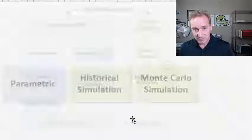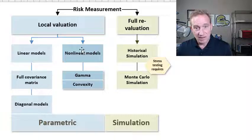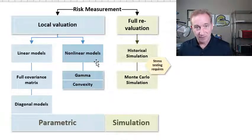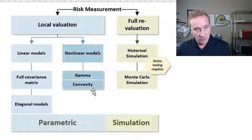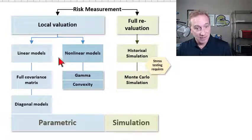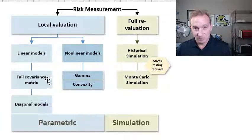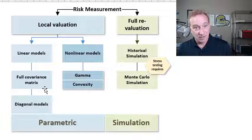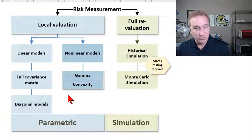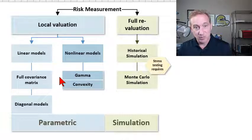Before I drill down on the parametric, I wanted to quickly overlay a typology that would be familiar to FRM students. The risk measures are divided into local valuation or full revaluation. Local valuation includes those familiar models where we lean on the mean variance framework and a covariance matrix. If you're working with portfolios and assets have volatilities and pairwise correlations, you're probably working in local valuation. It's a parametric approach and it's efficient.